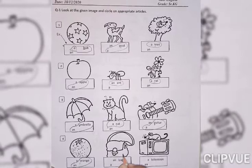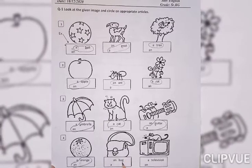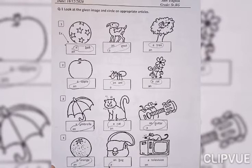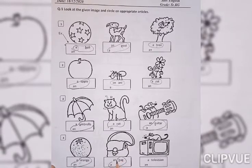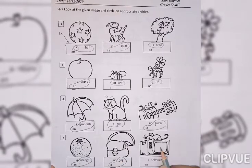Now, which picture is this? Bag. A bag. B is consonant. That's why A article will come. Now, what is this? Television. Television, it means TV.